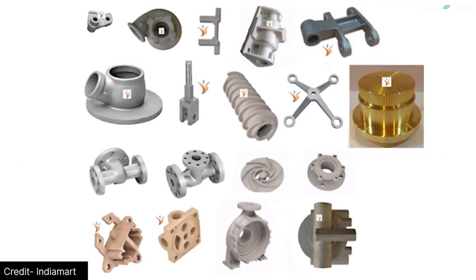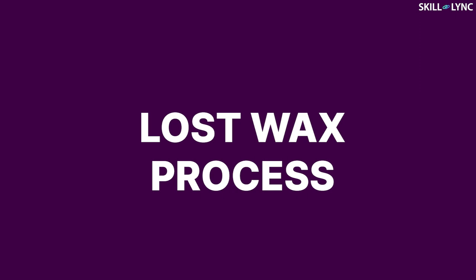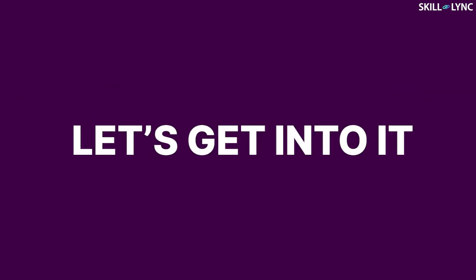This is where investment casting comes in. Investment casting is one of the special casting processes employed for manufacturing components which require excellent dimensional accuracy and surface finish. In this casting process, patterns made of wax are dipped into a slurry for preparing the mold. Once the mold is prepared, these wax patterns are melted out of the mold, which is why this process is also called the lost wax process.